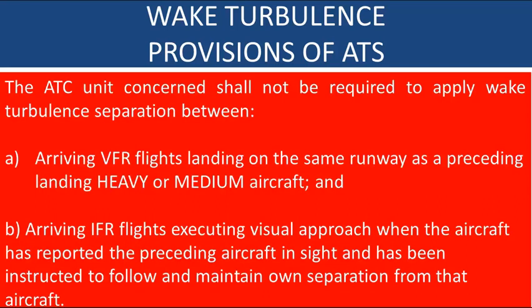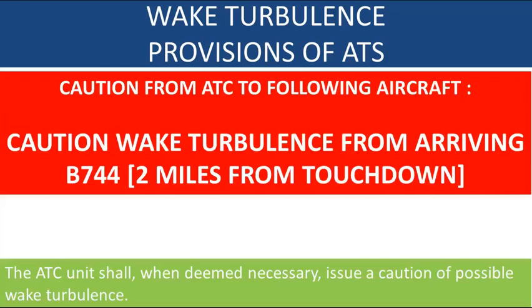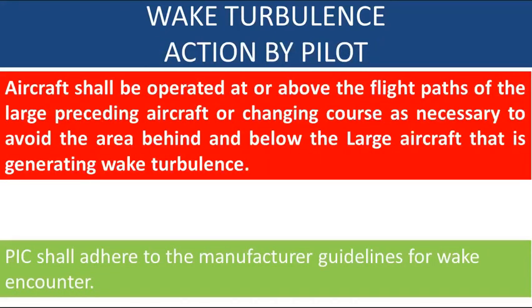When ATC is not providing wake turbulence separation — such as when a VFR aircraft is landing behind a large aircraft or a following aircraft is executing a visual approach — the ATC unit, when deemed necessary, shall issue a caution of possible wake turbulence. The pilot shall operate the aircraft at or above the flight path of the large preceding aircraft, or change course as necessary to avoid the area behind and below the large aircraft generating wake turbulence. The pilot in command shall adhere to manufacturer guidelines for wake encounter.